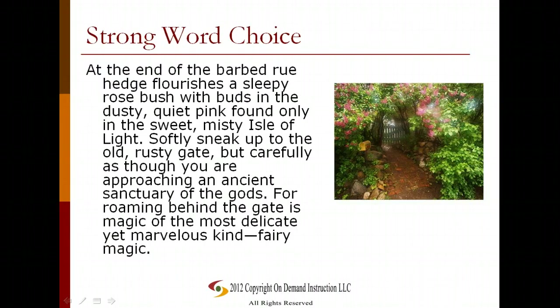Let's take a look at some examples. This is a description of a magical gate, and we're going to see how it uses strong word choice. "At the end of the barbed rue hedge flourishes a sleepy rose bush with buds in the dusty, quiet pink found only in the sweet, misty Isle of Light. Softly sneak up to the old, rusty gate, but carefully, as though you are approaching an ancient sanctuary of the gods. For roaming behind the gate is magic of the most delicate, yet marvelous kind. Fairy magic."